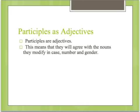Participles are adjectives, and this means that they agree with the nouns they modify in case, number, and gender. Case is nominative, genitive, dative, accusative, ablative; number is singular or plural; and gender is masculine, feminine, and neuter. So they will agree in those three ways with the nouns they modify.